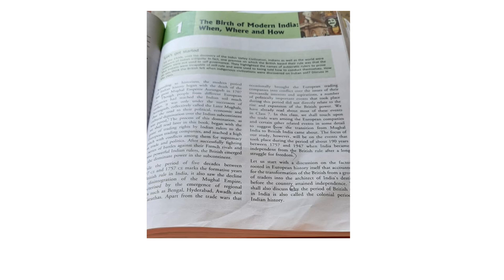As you have studied the Mughal Emperors in class 7th, after the death of Mughal Emperor Aurangzeb, people from different European countries — like Portuguese, Dutch, English and French — had reached the Indian soil much earlier. It was only under the successors of Aurangzeb, collectively called the later Mughals. After the death of Aurangzeb, nine rulers ruled the territories of the Mughals, and these nine rulers are called the later Mughals. These rulers granted trading rights to the European trading companies.